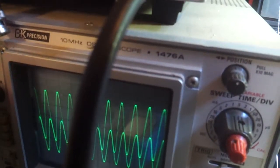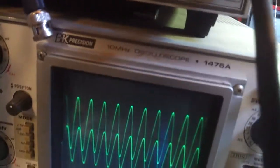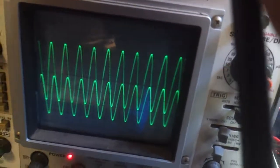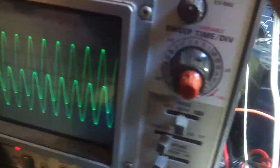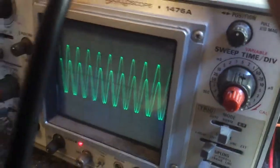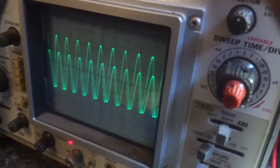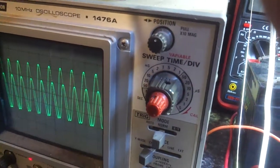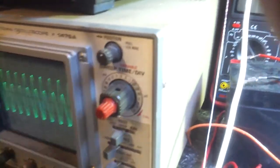So we've got 1, 2, 3, 4, 4 points - about 4.2 on the input, on the source. But notice the B channel now is a lot smaller, quite a bit smaller. It's showing 1, 2, 2.9 divisions, almost 3.